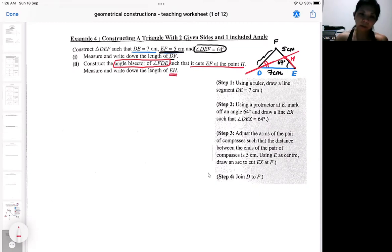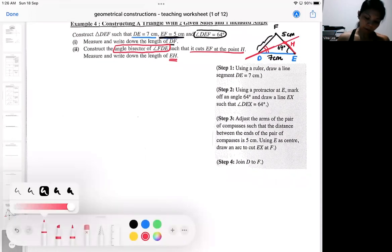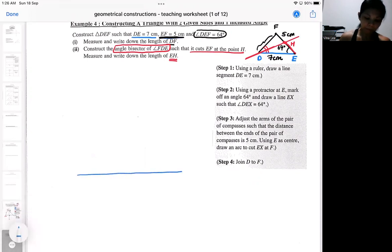So have a rough sketch first. Then you can proceed to the actual drawing. So let's look at the actual drawing. So I will be starting with DE. Then I should measure my 64 degree first. So you are going to put your projector here.